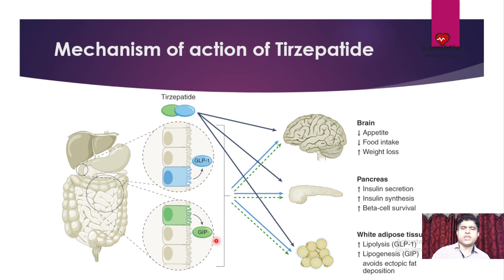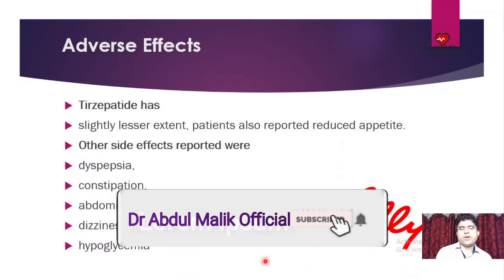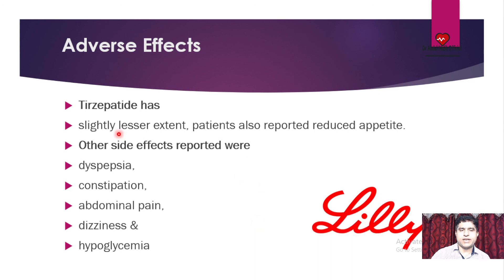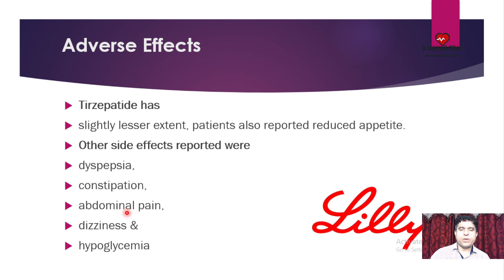This drug is only given for type 2 diabetes patients, not for type 1 diabetes. Regarding adverse effects, Tirzepatide has a slightly lesser extent of adverse effects. Patients also reported reduced appetite. Other reported adverse effects include dyspepsia, constipation, abdominal pain, dizziness, and hypoglycemia.